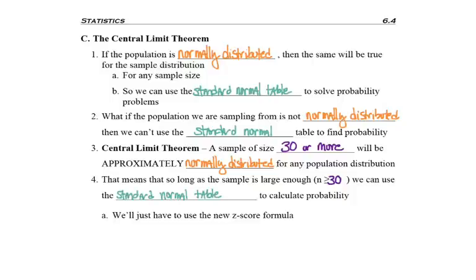So even if we have a uniform distribution or a right or left skewed population, so long as our sample size is big enough, then we do get to use the z table, the standard normal table.